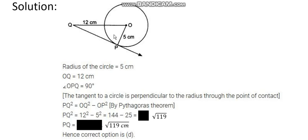Then we can apply the Pythagoras theorem. So OQ is the hypotenuse, OP is given. We can find the length of QP by using the Pythagoras theorem.